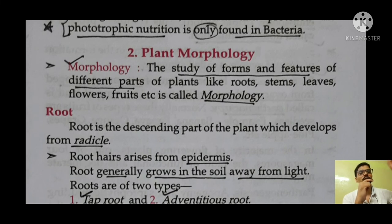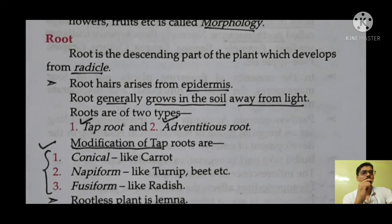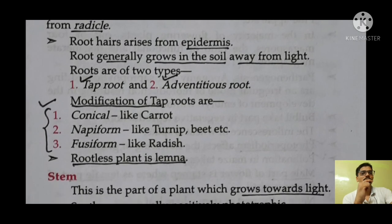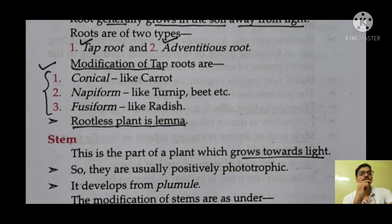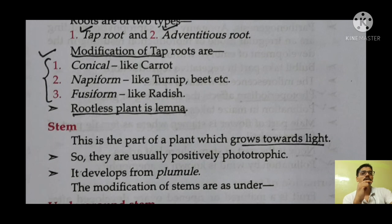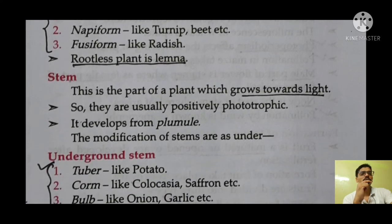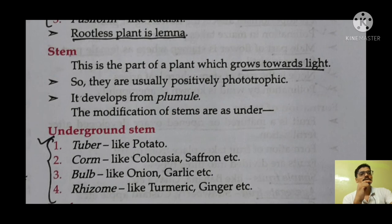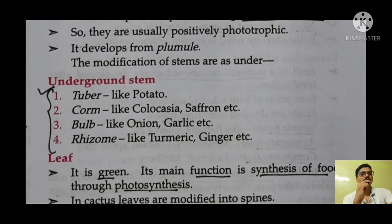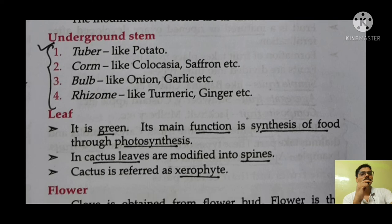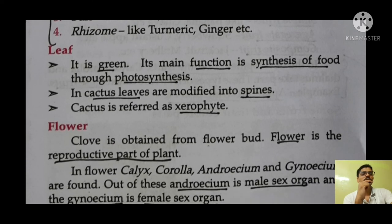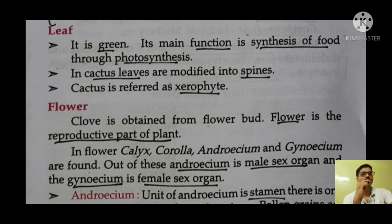Next is plant morphology — the study of forms and features of different parts of the plant. First is root. Root hairs arise from epidermis. Root generally grows in the soil away from light. Roots are of two types: tap root and adventitious root. Modification of root: carrot is conical and radish. A rootless plant is called lemna. Next is stem — stem is the part that grows towards light. Underground stem examples: onion is a bulb, potato is a tuber. Next is leaf — leaf is green and the main function is synthesis of food through photosynthesis. In cactus, leaves are modified into spines. Cactus is referred to as a xerophyte.